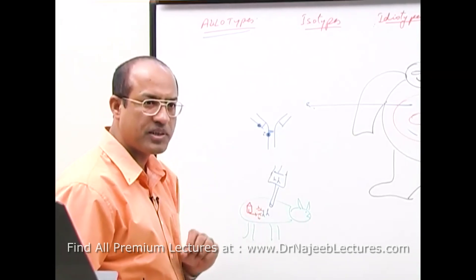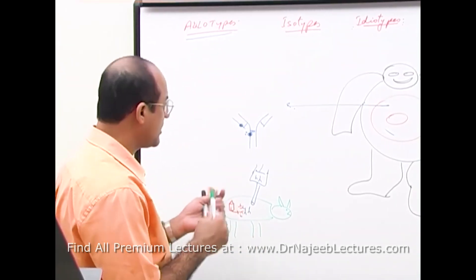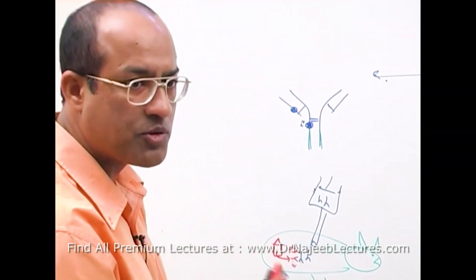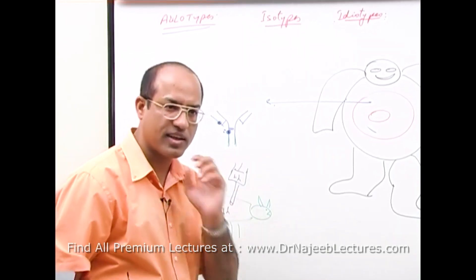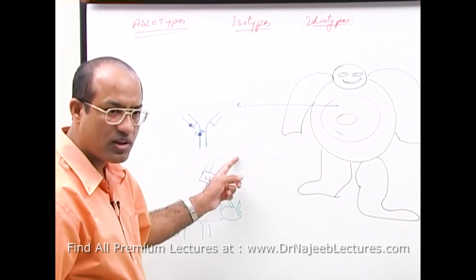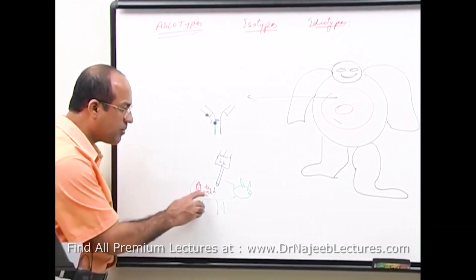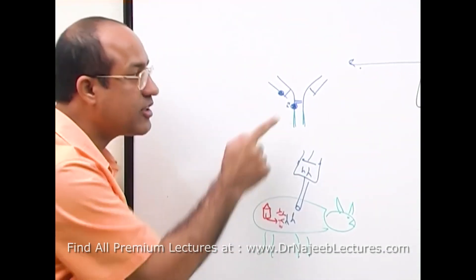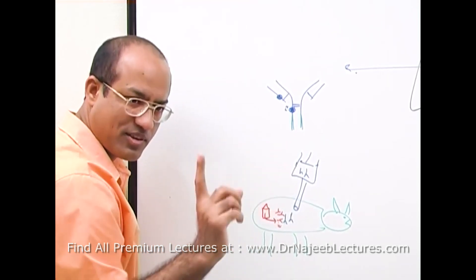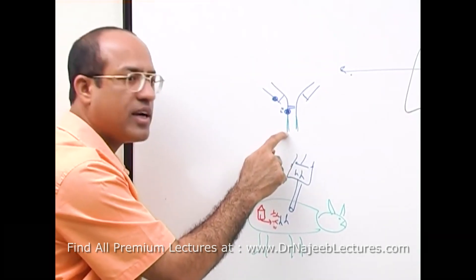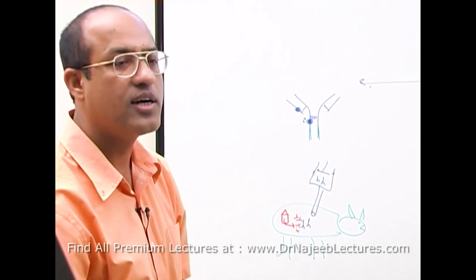Isotype means the differences in antibodies in the same person due to heavy chains. You know the constant region of the heavy chain. How many different types of heavy chain is one person making mainly? Five types — because these are the five basic classes. So if we bring all his antibodies out and classify them according to the constant of the heavy chains, there will be five main groups. Those groups are called isotypes.